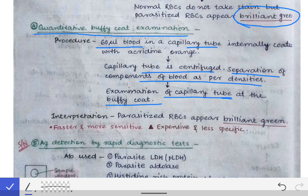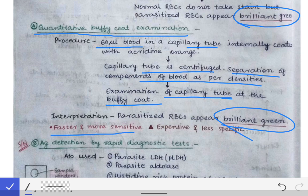The parasitized RBCs produce the same brilliant green color, allowing detection of parasites. The advantage of QBC is that it is faster and more sensitive. The disadvantage is that it is expensive and less specific.